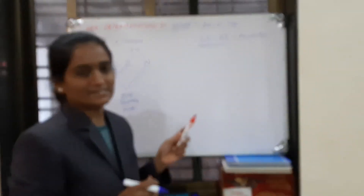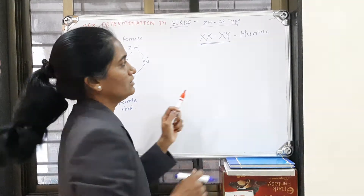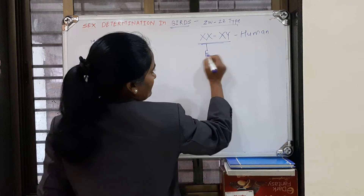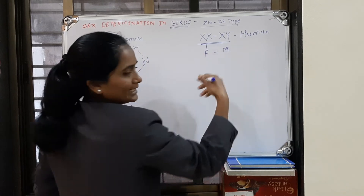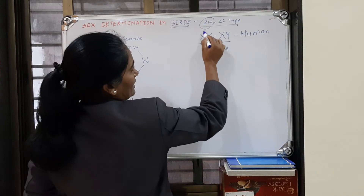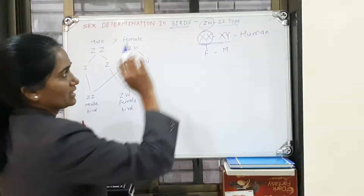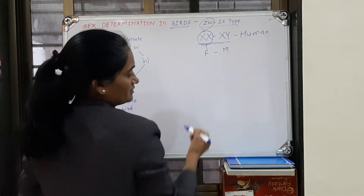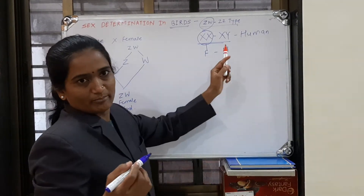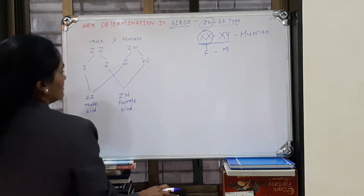Here is a small trick to remember this. We note the female first and the male later. In birds, ZW is the female, and in humans, XX is also the female. So the female genotype is always written first in the notation.